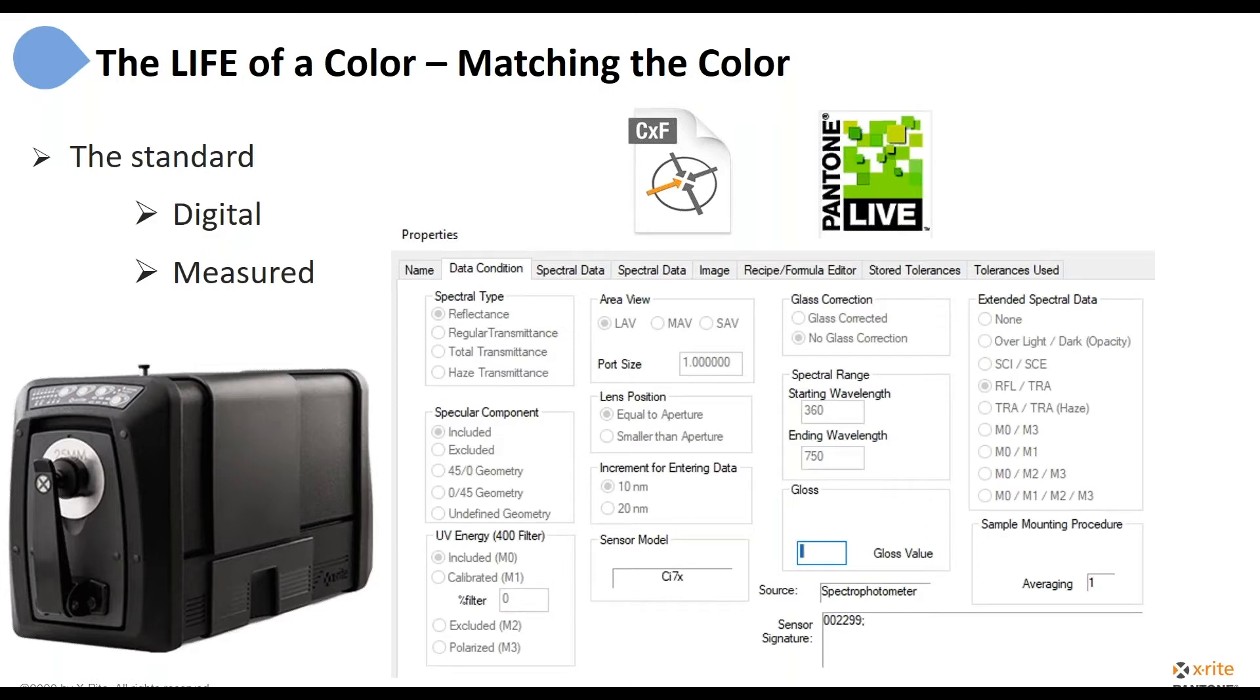Now whether it's digital or it's measured, the path forward to do the matching and everything remains the same, but we have to be concerned about this information we're showing you here about how was that measurement done. If it was done with a sphere instrument, was it done specular included or specular excluded, and was it UV filtered or not? Whether it's digital data where we can see that information from the digital data or how we had our instrument physically set up, those things will impact that color and give us a different color that we're matching. That's why we've got to get it right.